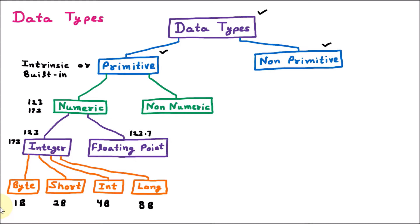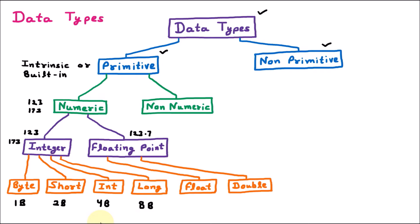Inside floating point, we deal with decimal values. For example, data like 173.9 contains a decimal point, so it requires a floating point type. There are two subcategories: float and double. For four bytes of floating point data we use float, and for eight bytes we use double. So if the value is very large we need double, and for smaller values we use float.